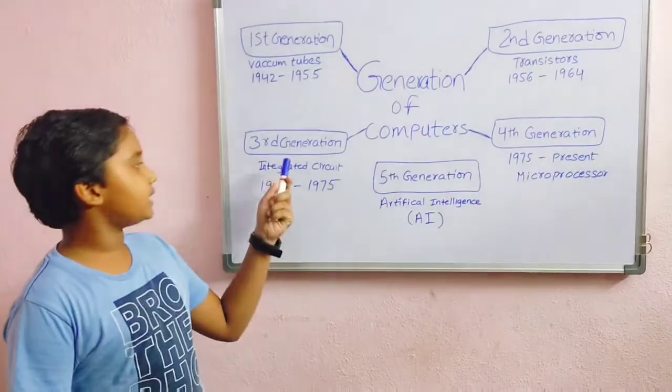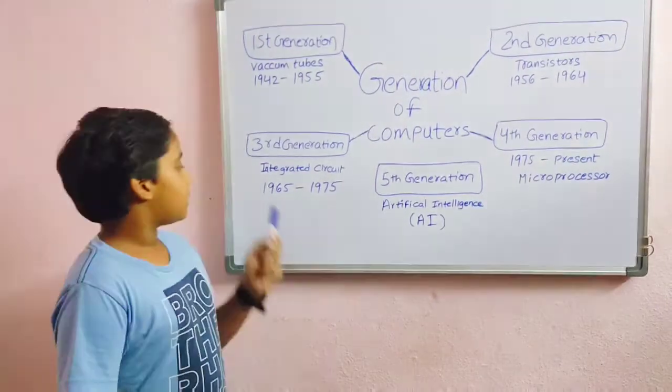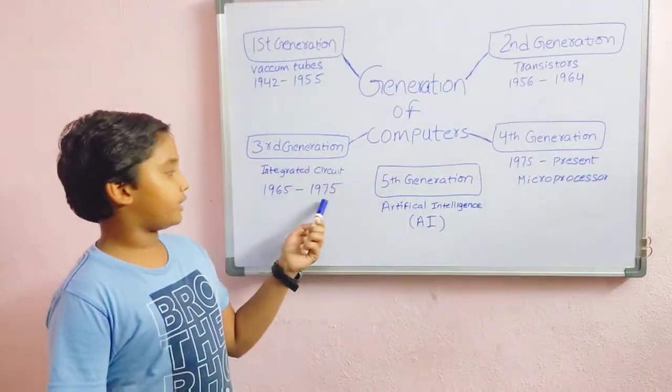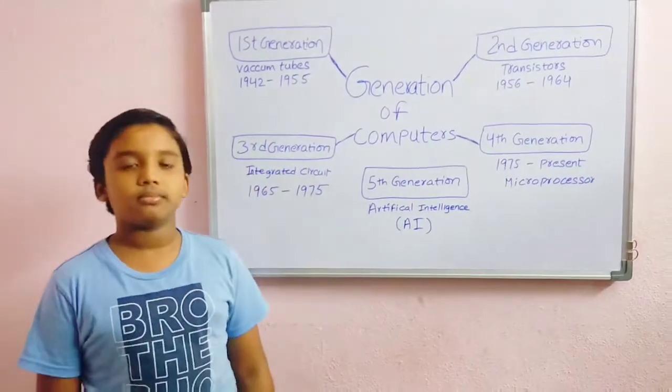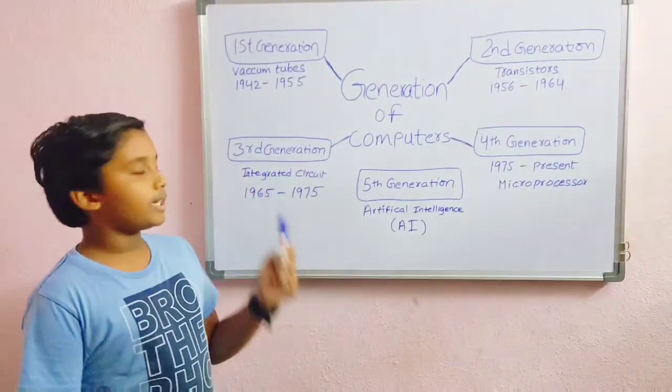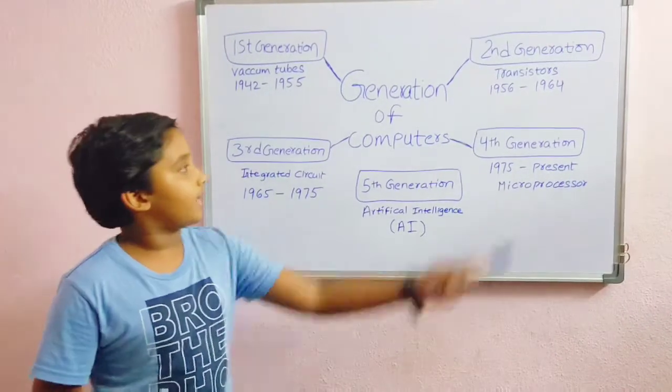The third generation computers. 1965 to 1975 was the period of the third generation computers. An integrated circuit is as small as a transistor but it can work as fast as thousands of them.